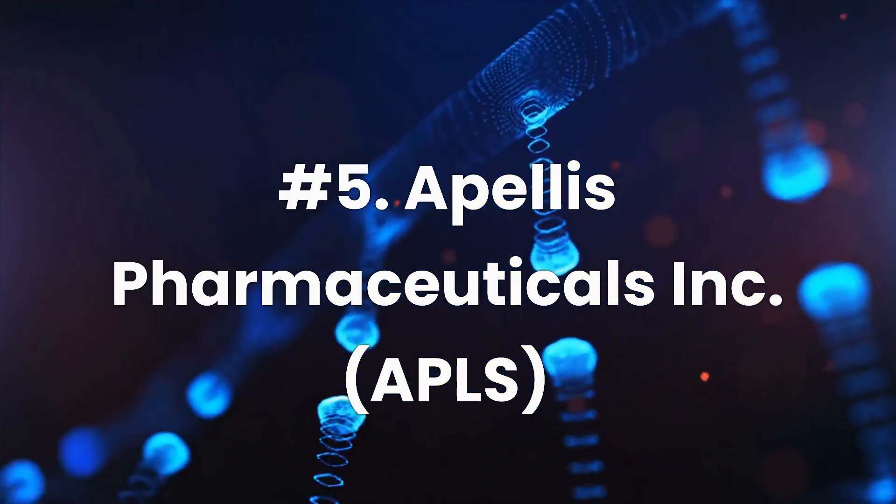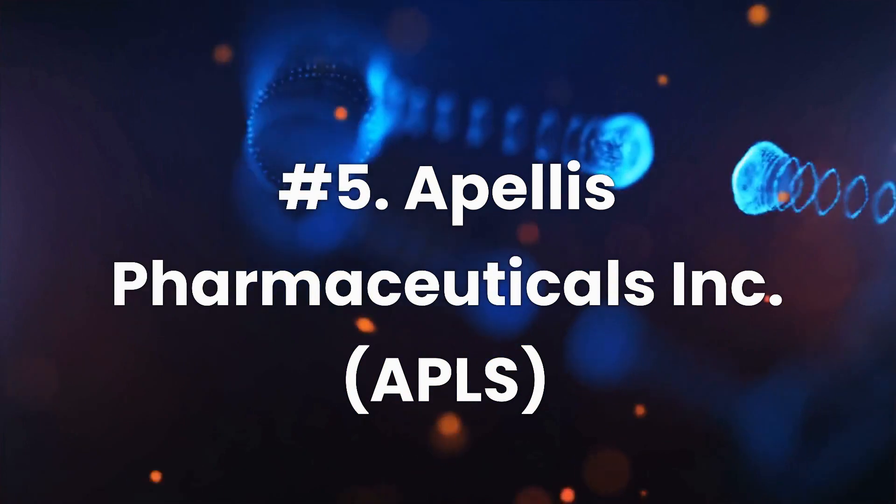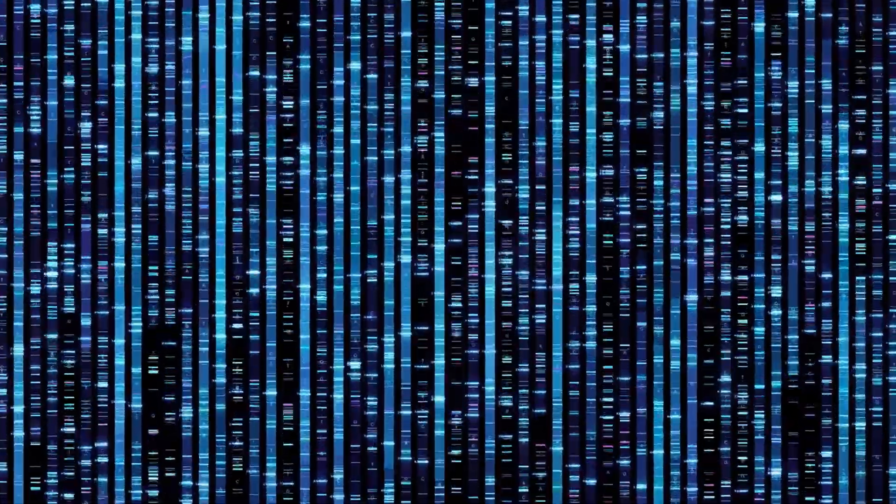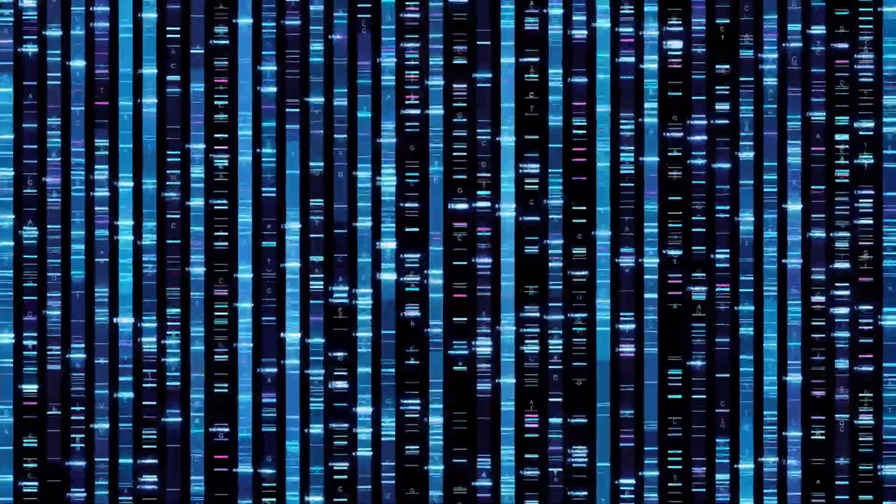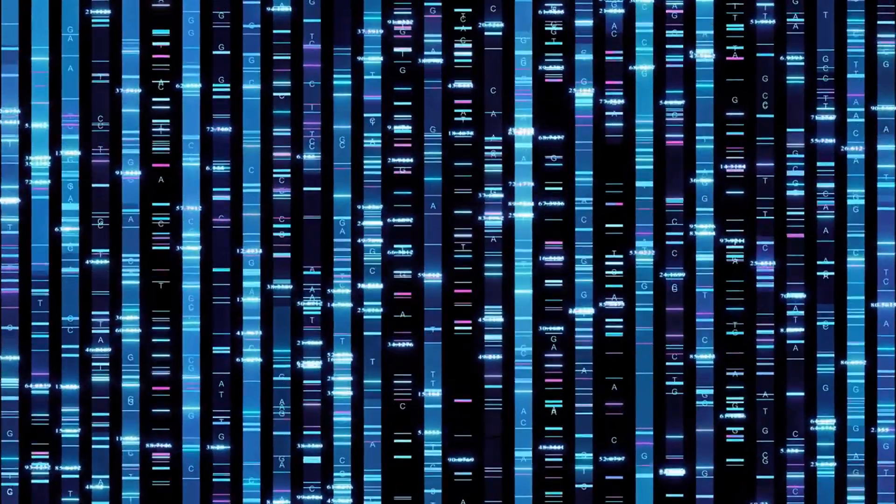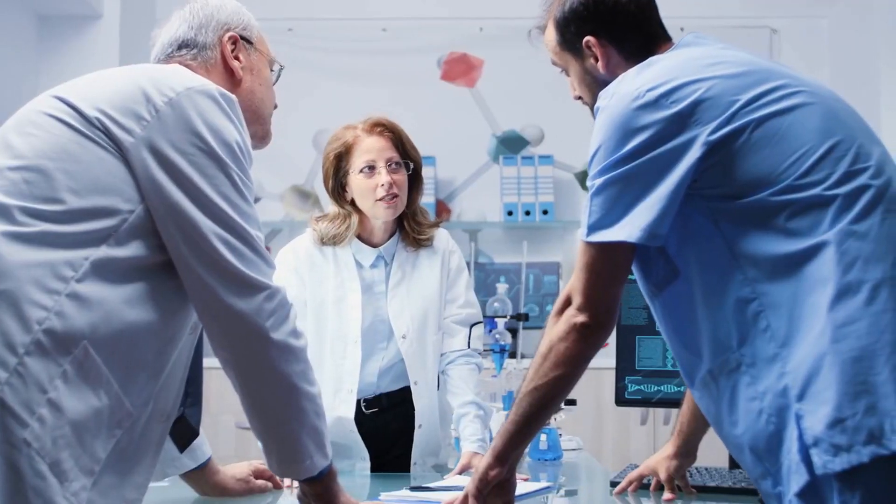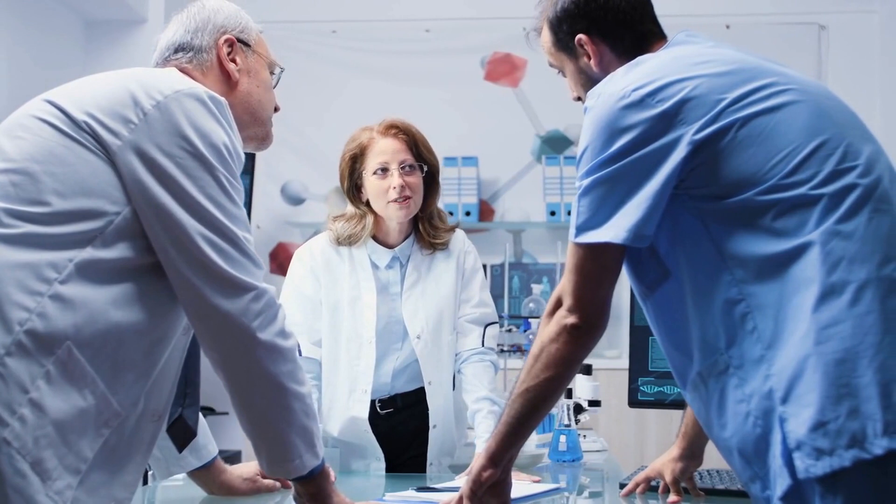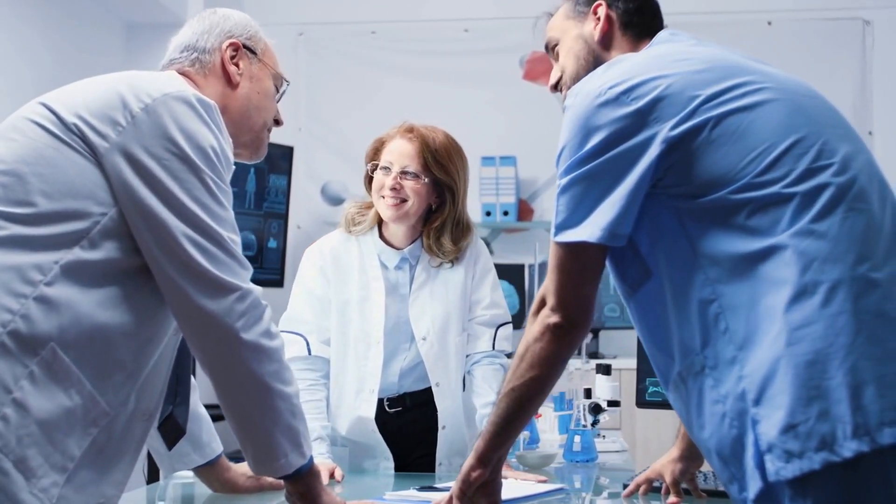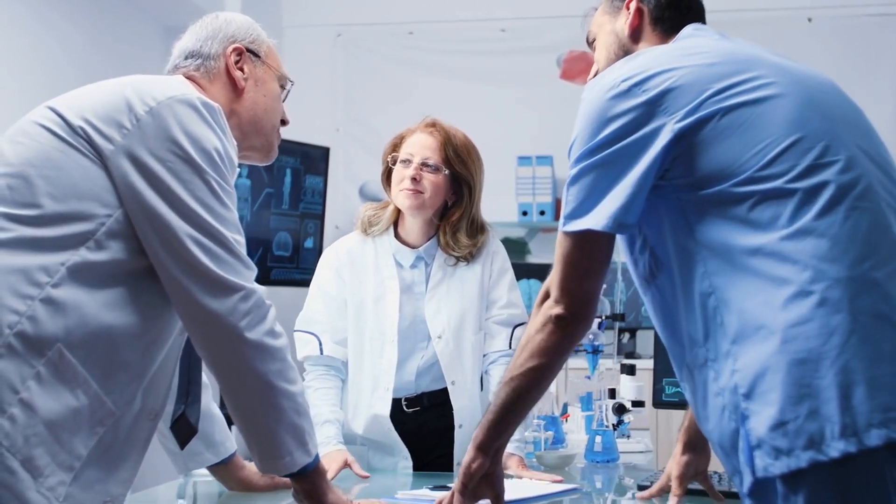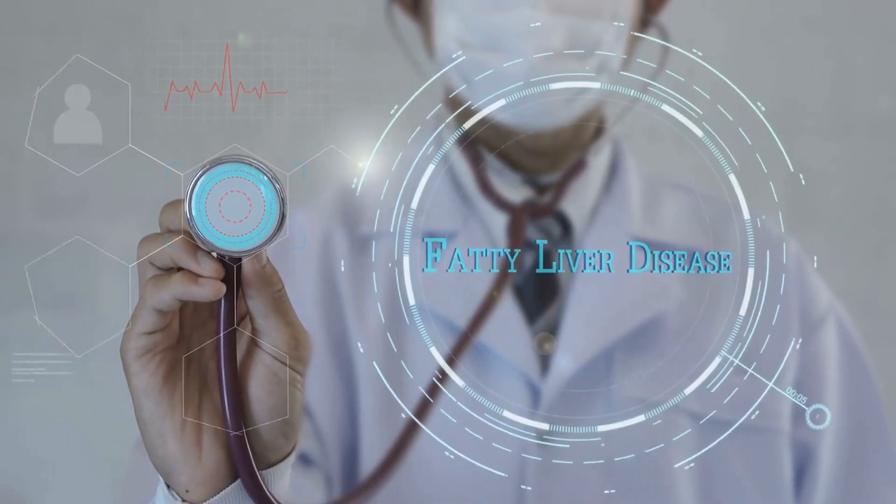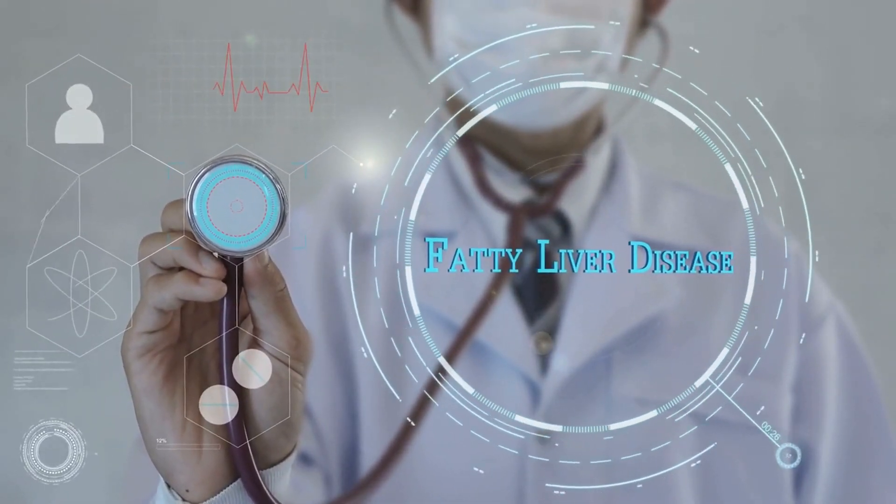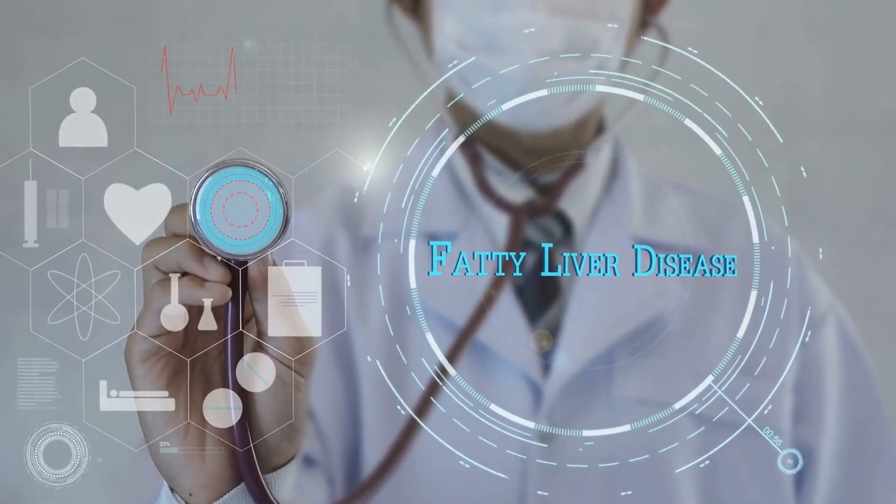Number 5: Apellis Pharmaceuticals Inc., ticker APLS. Apellis Pharmaceuticals is a biotech company focused on therapies targeting the complement pathway of the immune system, which enhances the immune system's ability to clear damaged cells. The company's main product is Pegcetacoplan, which is already approved in the U.S. for treating paroxysmal nocturnal hemoglobinuria, a rare acquired blood disease, and is in late-stage development for treating geographic atrophy, a cause of vision loss in old age. In 2021, Apellis announced a new collaboration with Beam Therapeutics to leverage base editing technology to research new precision therapies for the eye, liver, and brain.